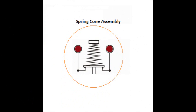In the spring cone assembly, the conical spring is attached to a fixed end on one side and to a floating end on the other side, along with a ball weight revolving around the spring.